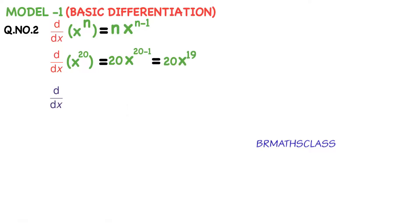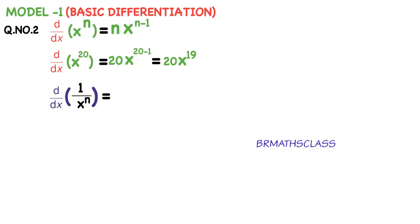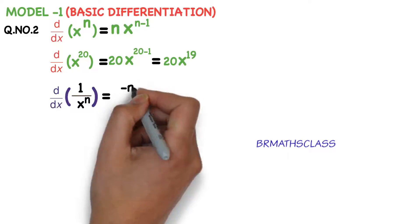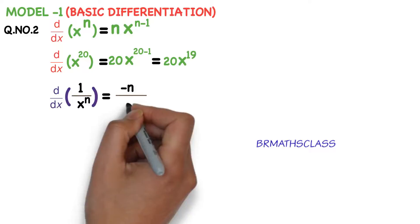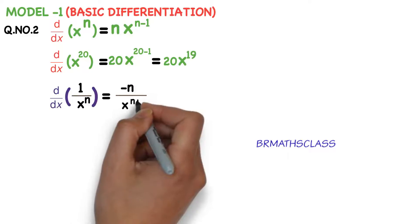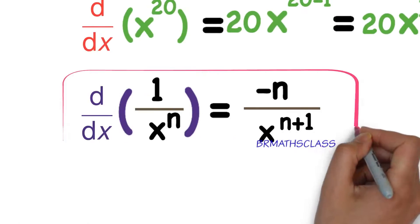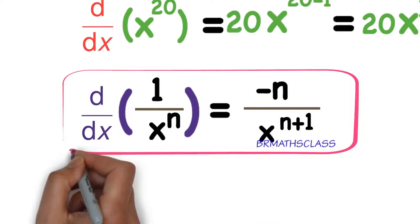Now, d by dx of 1 divided by x power n. What is the derivative of 1 by x power n? The derivative of 1 divided by x power n is minus n divided by x power n plus 1. And in this class we will learn how to use this formula.